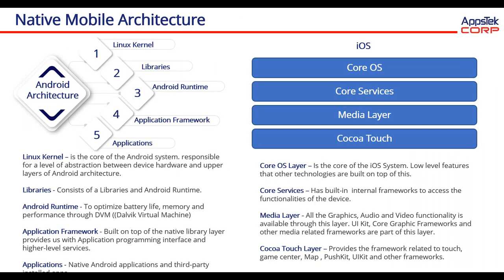Now moving into mobile architecture — a quick view of different application architectures, how Android and iOS are designed. Android has a Linux kernel, which is the core of the Android system and the layer between device hardware and upper layers of the Android architecture. Libraries consist of all the libraries available that can access hardware components, and also contain the Android runtime. The Android runtime optimizes battery life, memory, and performance through the Dalvik Virtual Machine (DVM). When an application build is generated, it generates into bytecode.